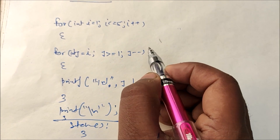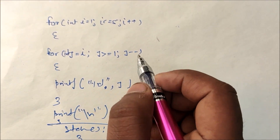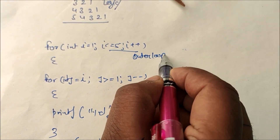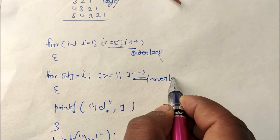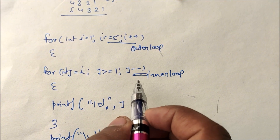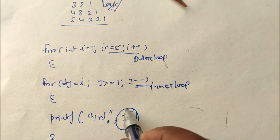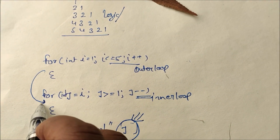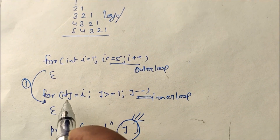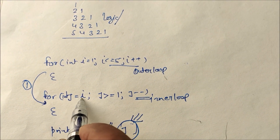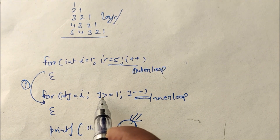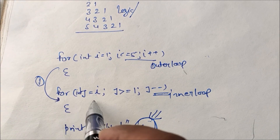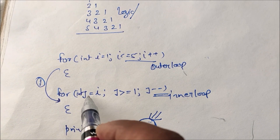Now I want to discuss the logic of this program. This is the outer loop and this is the inner loop. In this program I am printing the j value inside the inner loop. When i = 1, that value comes into the picture.